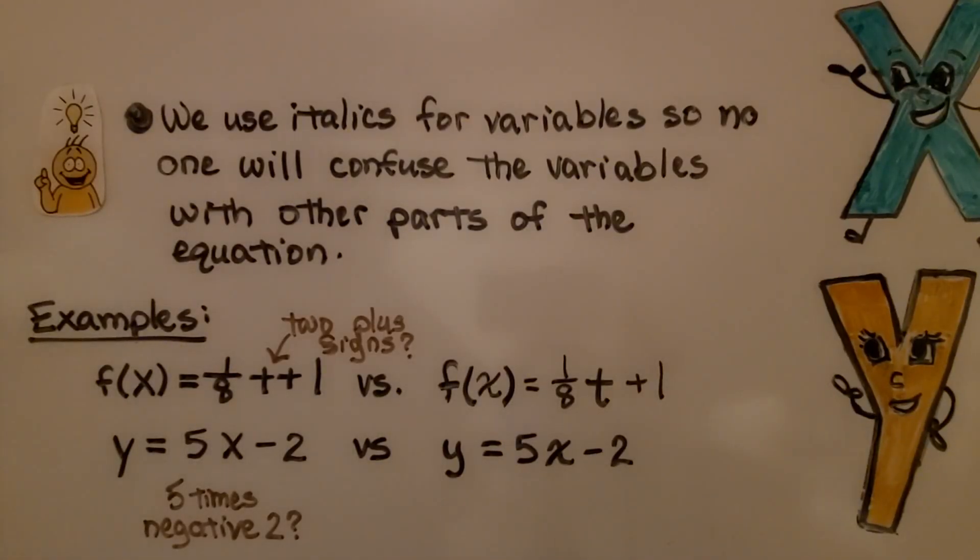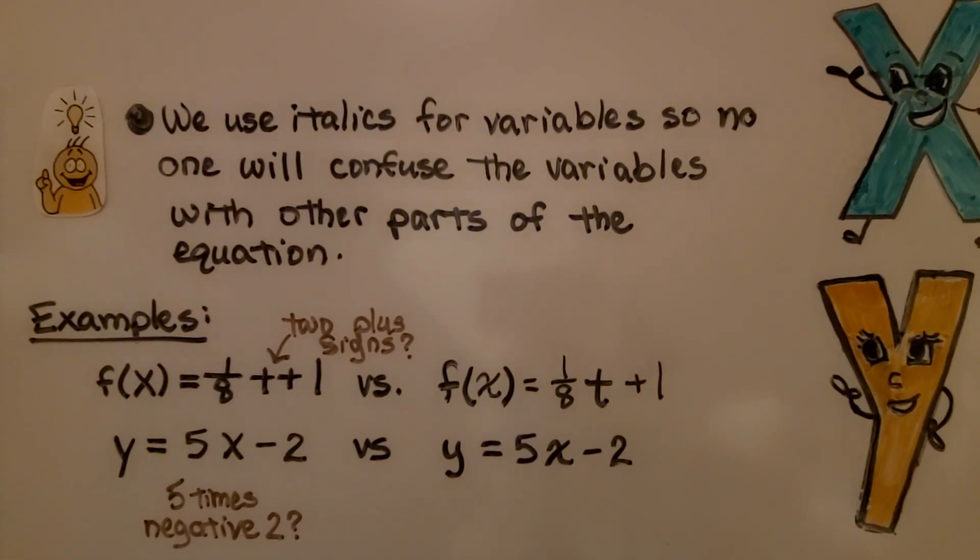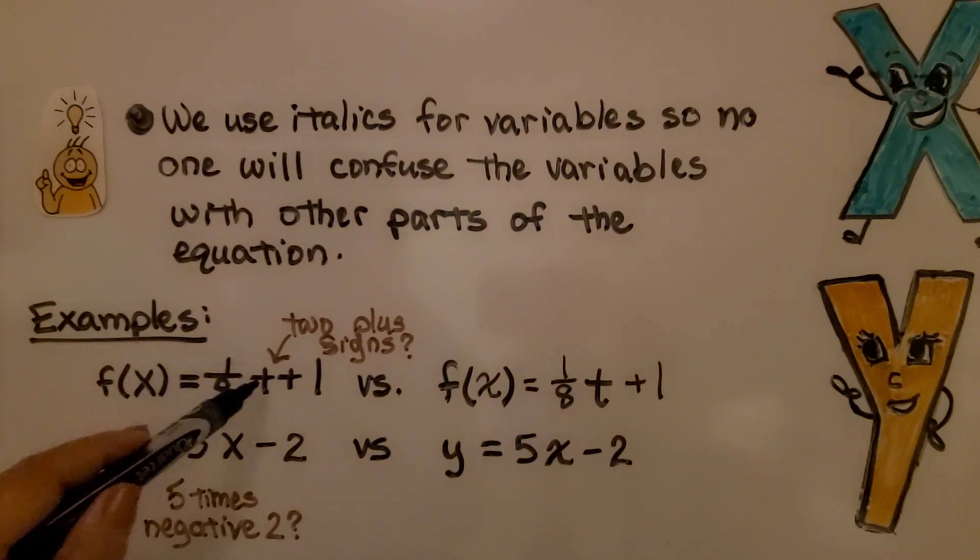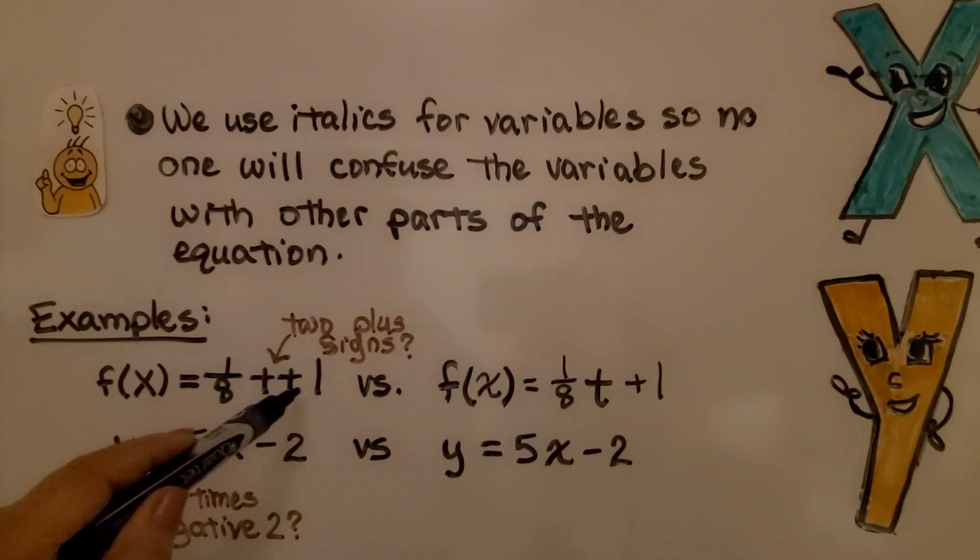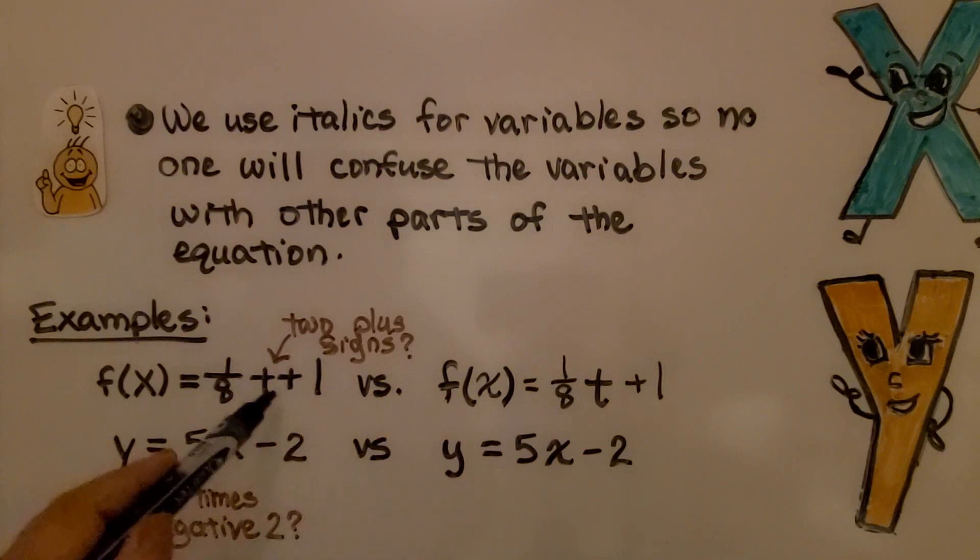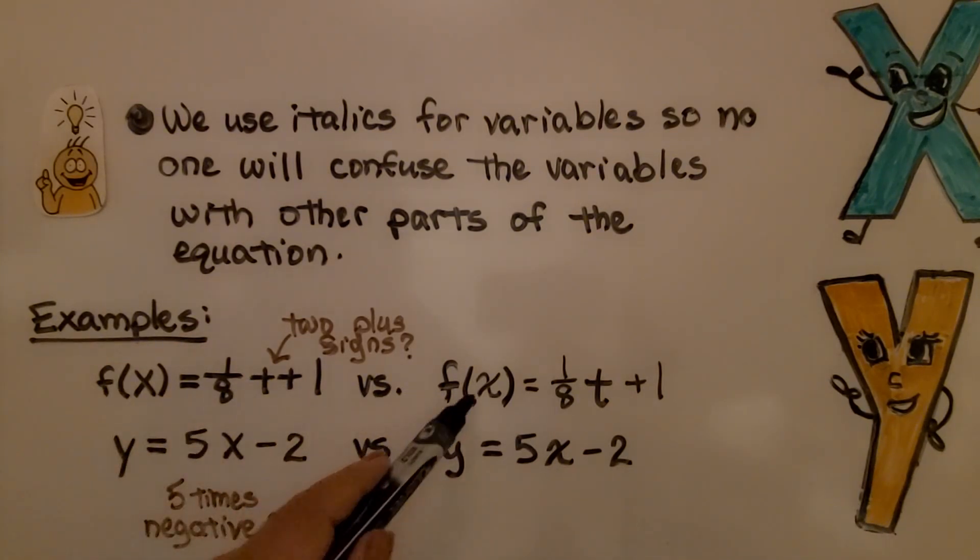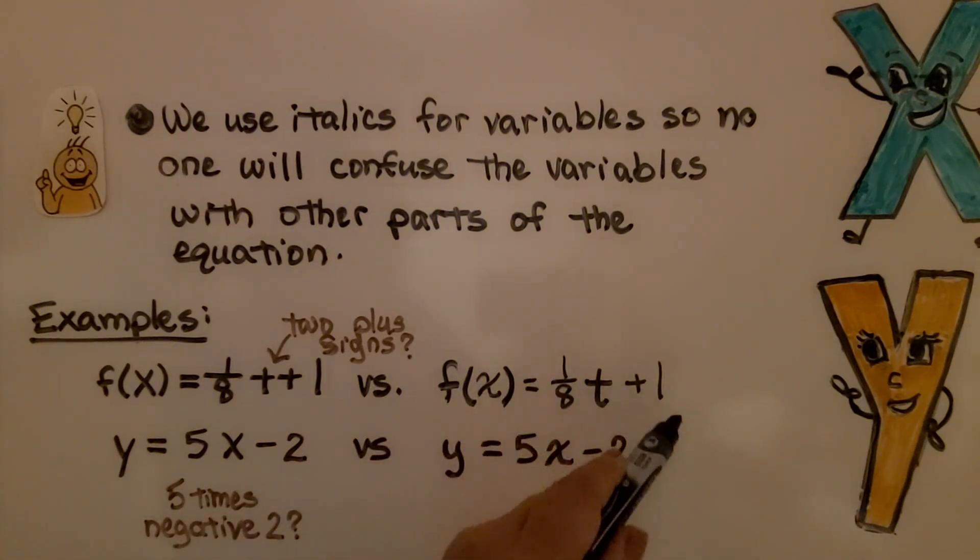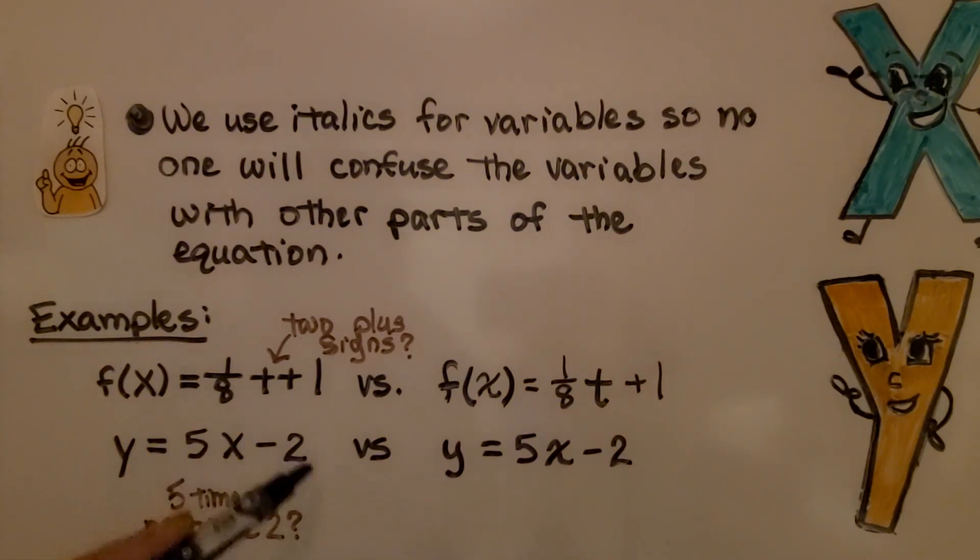I also wanted to let you know that we use italics for variables, so no one will confuse the variables with other parts of the equation. If we wrote f(x) equals 1/8, if we write that quickly, is it 2 plus signs and a 1? Well, we know it should be t for time, if we're familiar with the equation, but someone else reading it might think that it's 2 plus signs. If we write them in italics, we know it's f(x) equals 1/8 t plus 1. If we have y equals 5x minus 2, someone who's not familiar with this might think you're writing 5 times negative 2. If we write the x with a little bit of italics, we know it's 5x minus 2. I've had several subscribers comment on why do you have to write it swirly like an italics, and this is why.